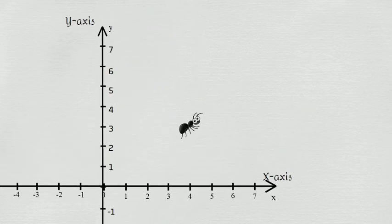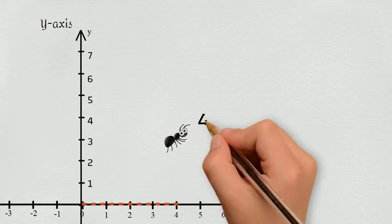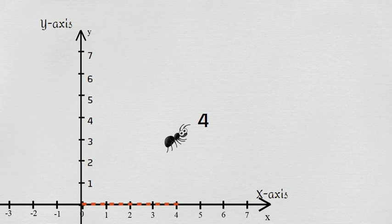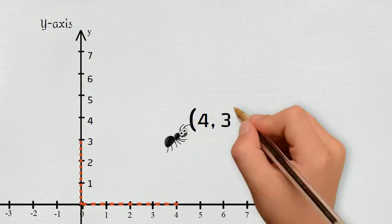If the ant is here, it's four units away from the origin on the horizontal axis, and three units away from the origin on the vertical axis. Then we can write the current position as (4,3) in round brackets.